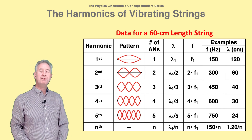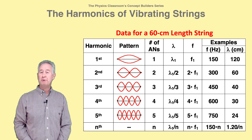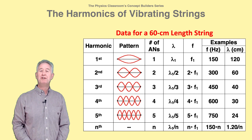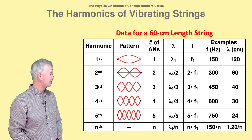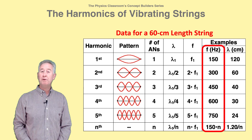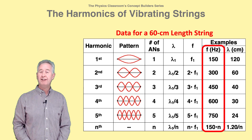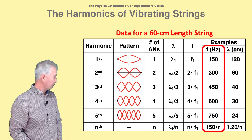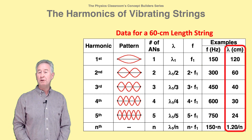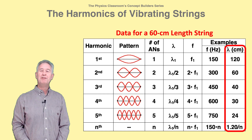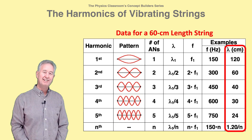This table summarizes the relationship between the pattern, the frequency and wavelength values, and the number of antinodes for the first several harmonics. In general, if you know the frequency of any harmonic, you can determine the frequency of all the harmonics. And if you know the string length, you can determine the wavelength of the first harmonic and the wavelength for all the harmonics.